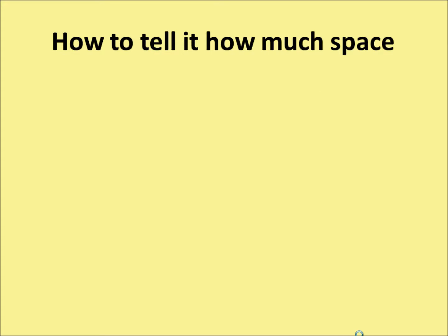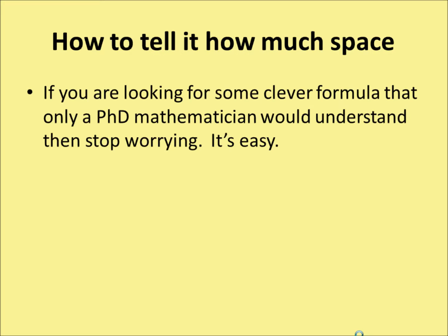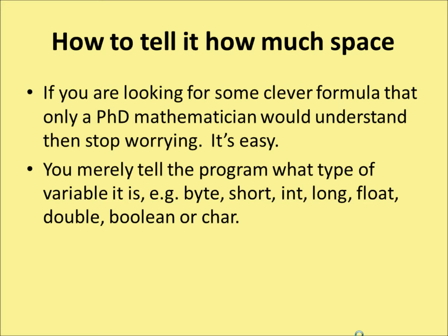So how do we tell it how much space to leave? If you're looking for some clever formula that only a PhD mathematician would understand, stop worrying — it's easy. All you do is tell the program what type of variable it is. Java comes with eight specific data types, and these can then be combined to create more complicated things. Those eight types are: byte, short, integer, long, float, double, boolean, and char. We're going to look at each of those in turn in a moment.